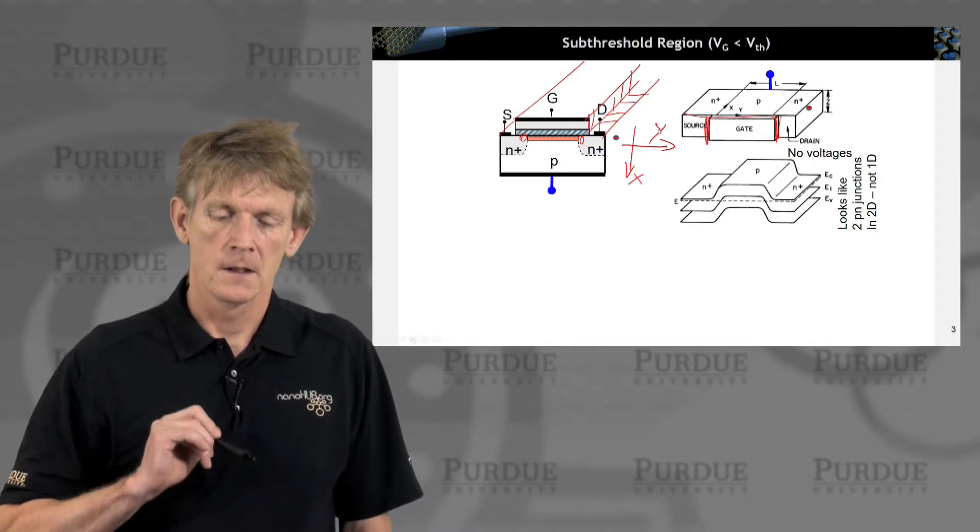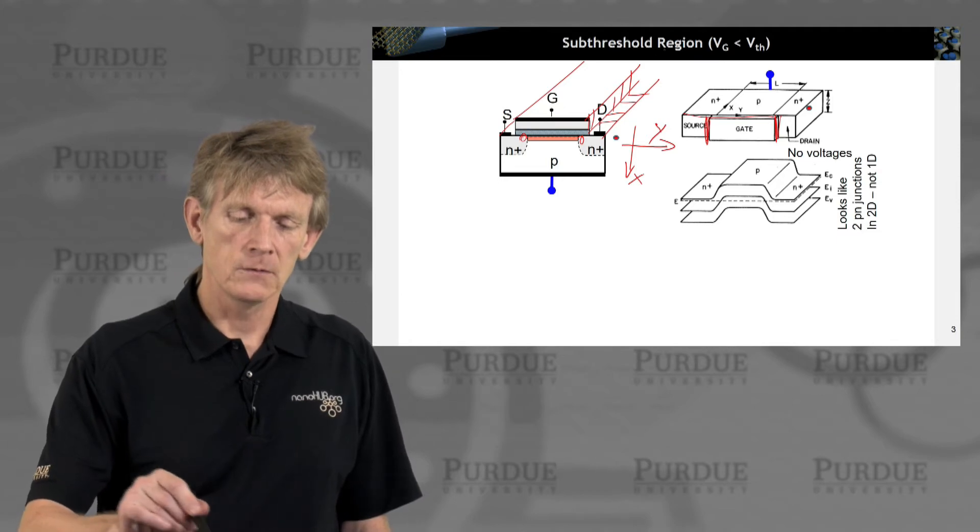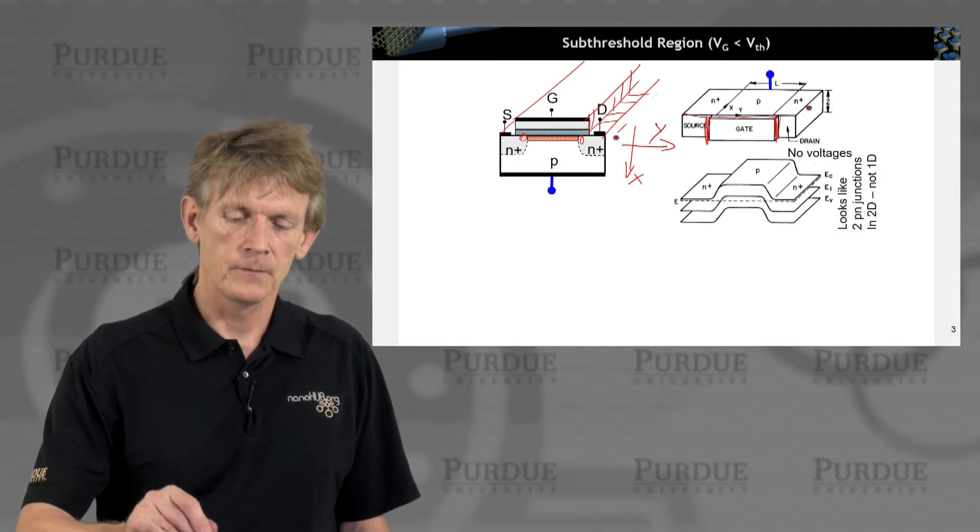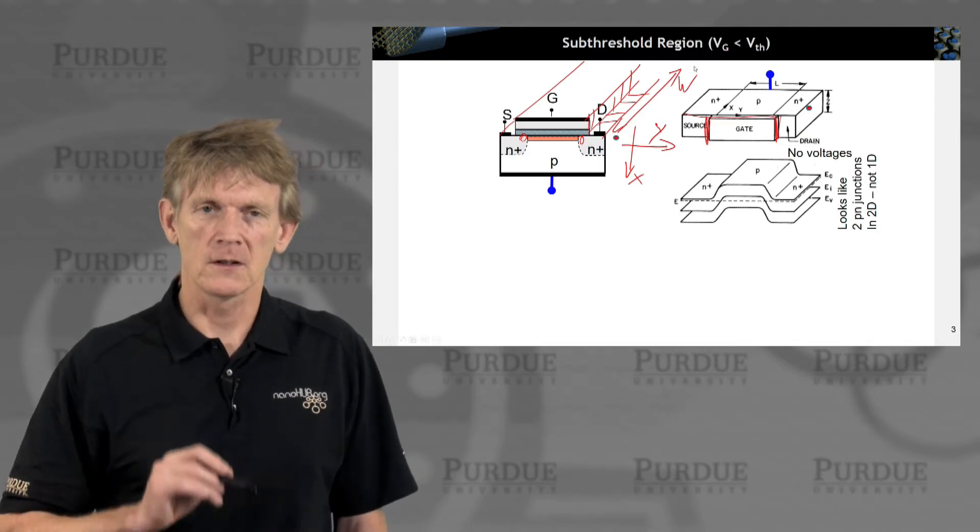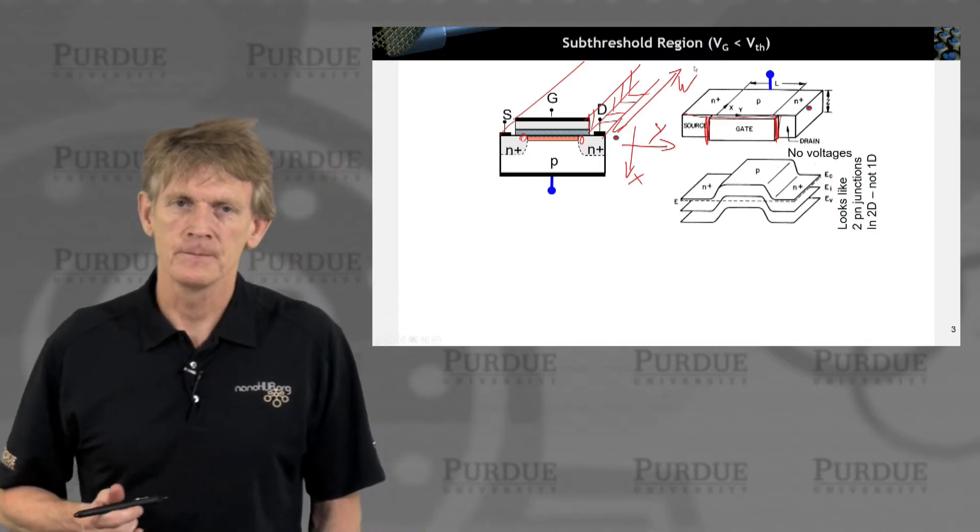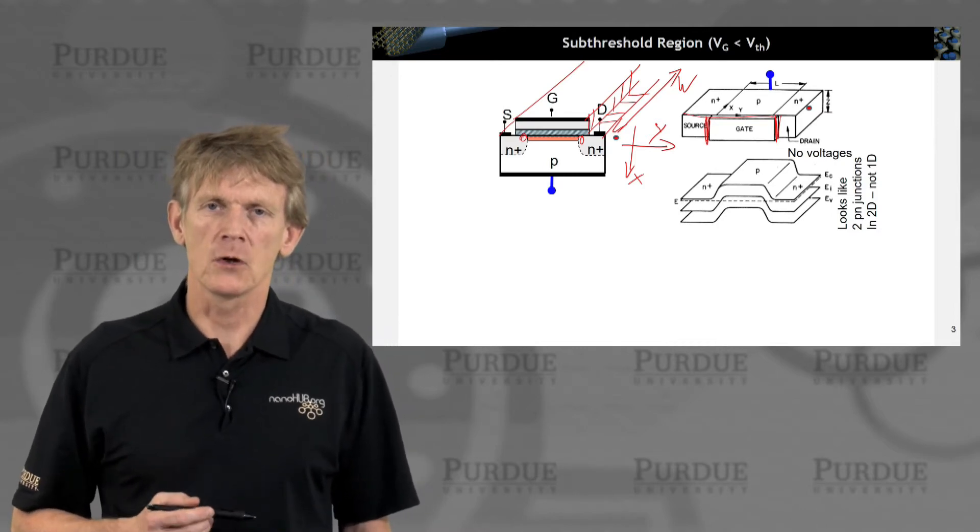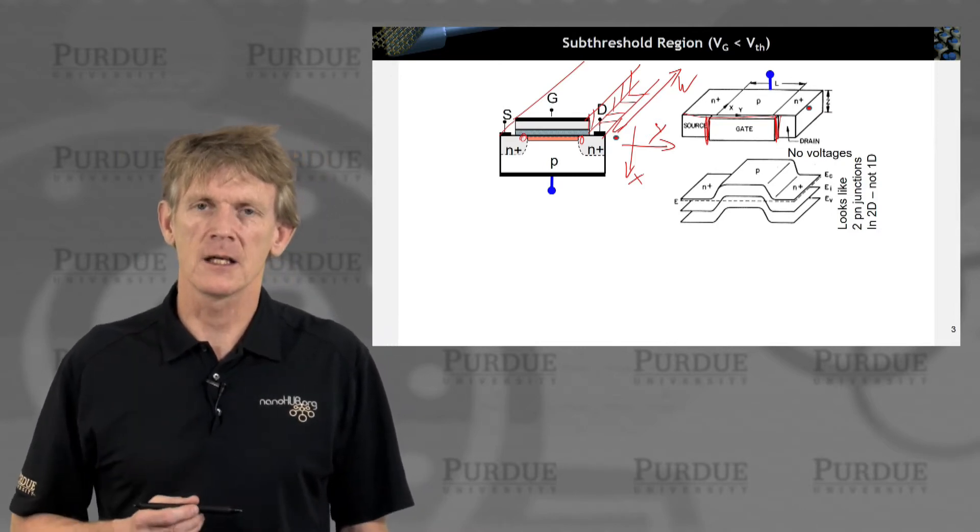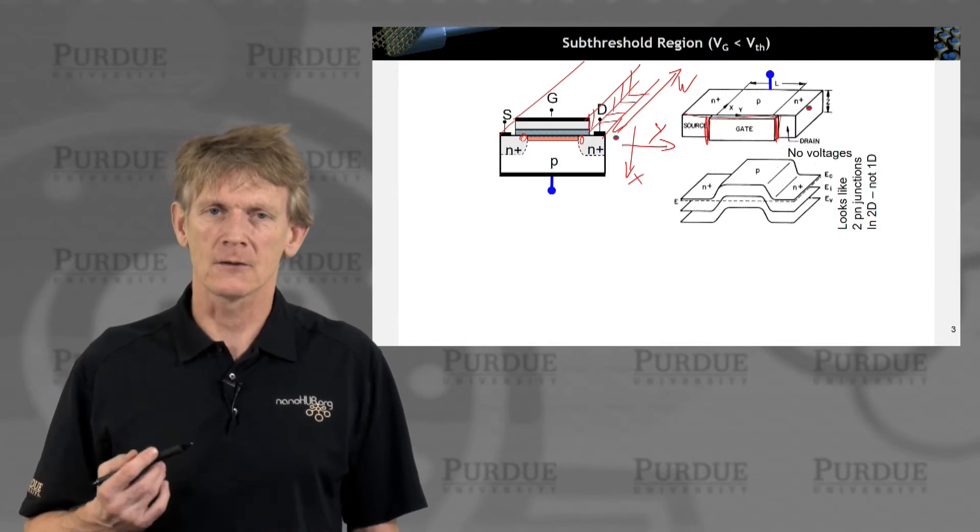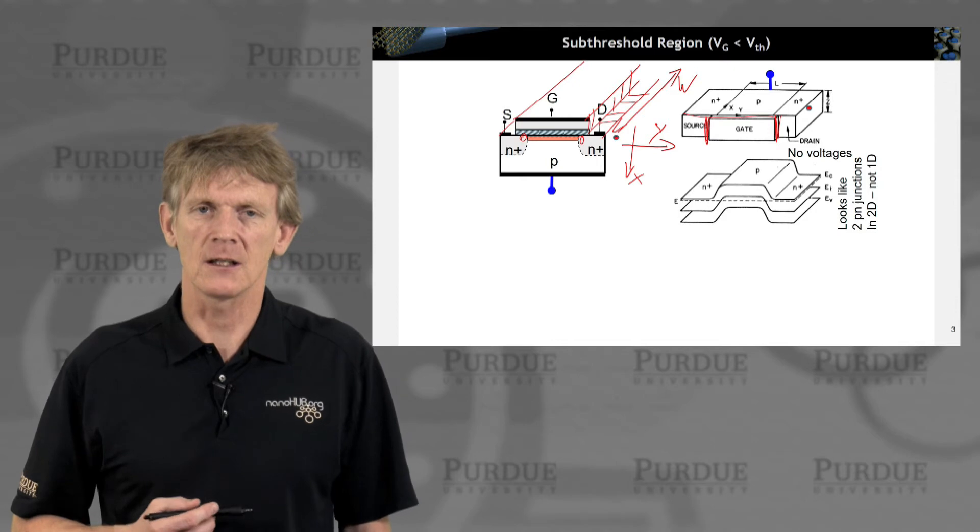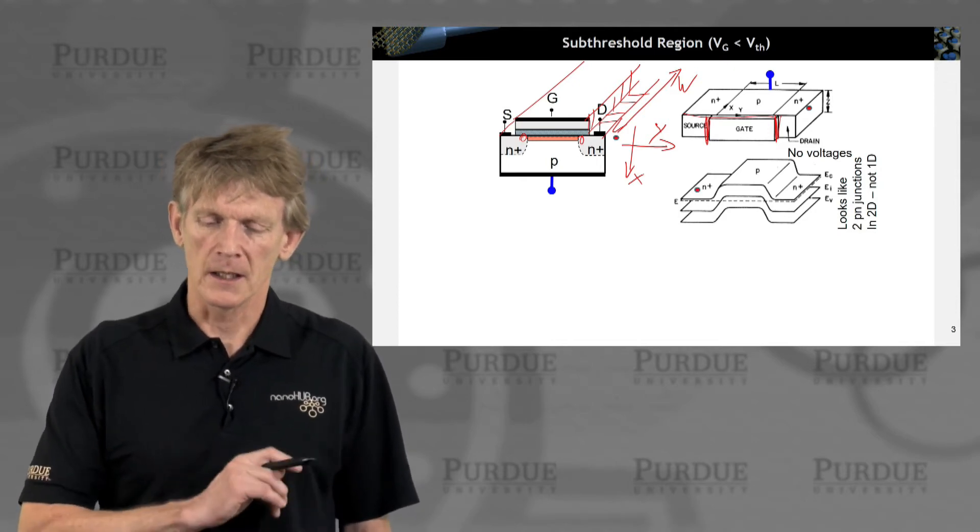And then there is a width W of this overall system. That's the left over Z direction. We consider that to be infinitely large for all calculations, meaning there's no variations, spatial variations in that direction. And we just multiply by some width because the transistor ultimately will have some width over which the electrons will flow.